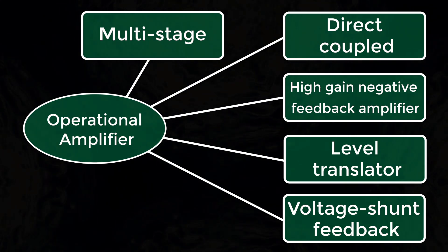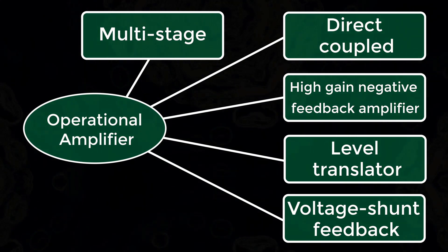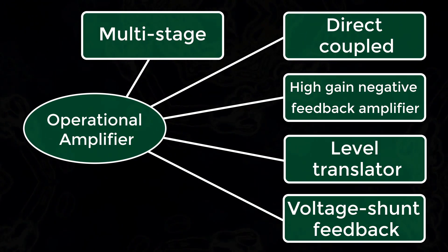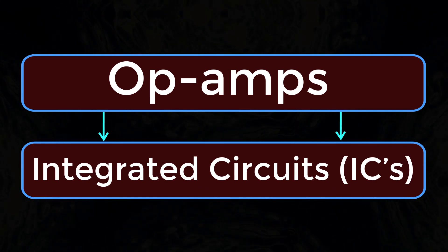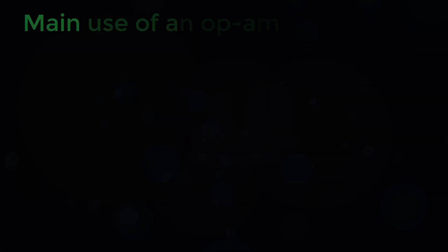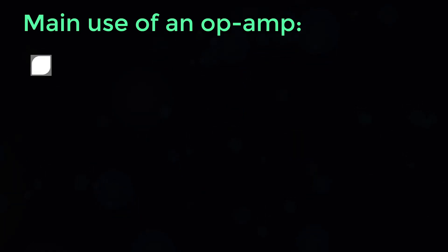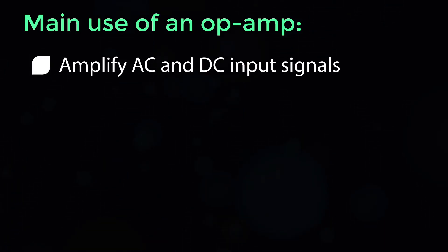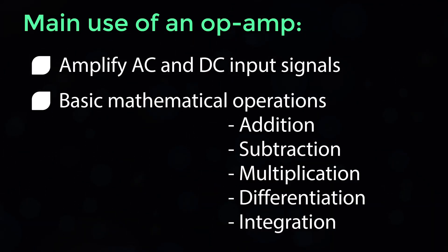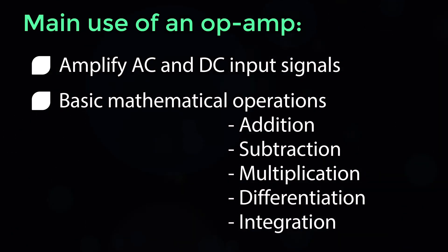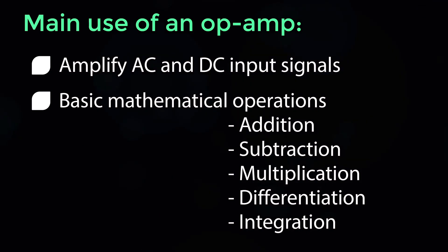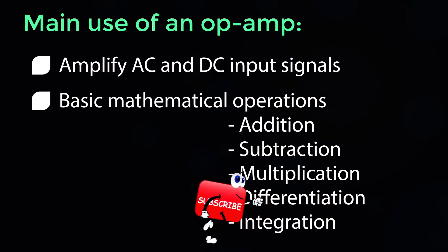A voltage shunt feedback is provided in an Op Amp to obtain a stabilized voltage gain. Op Amps are available as Integrated Circuits (ICs). The main use of an Op Amp is to amplify AC and DC input signals, and it was initially used for basic mathematical operations such as addition, subtraction, multiplication, differentiation, and integration.